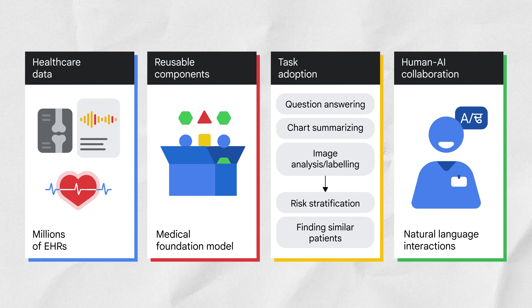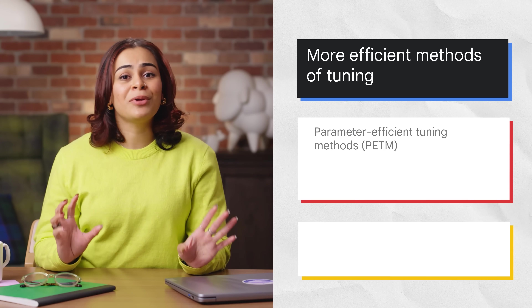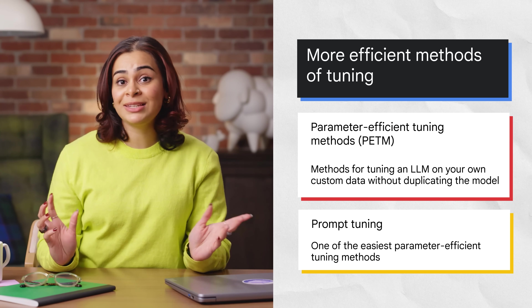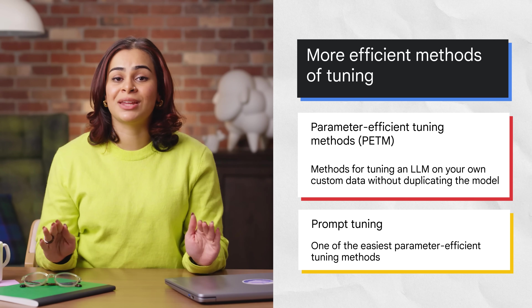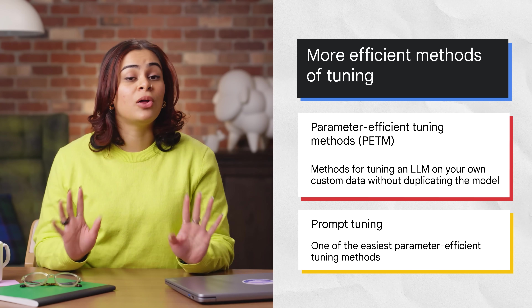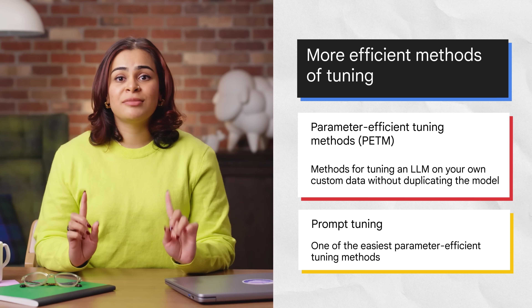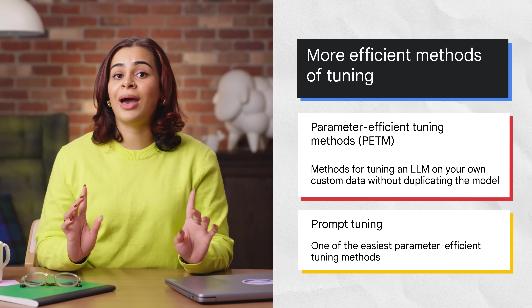Fine-tuning is expensive and not realistic in many cases, so are there more efficient methods of tuning? Yes. Parameter-efficient tuning methods, or PETM, are methods for tuning a large language model on your own custom data without duplicating the model. The base model itself is not altered. Instead, a small number of add-on layers are tuned, which can be swapped in and out at inference time.